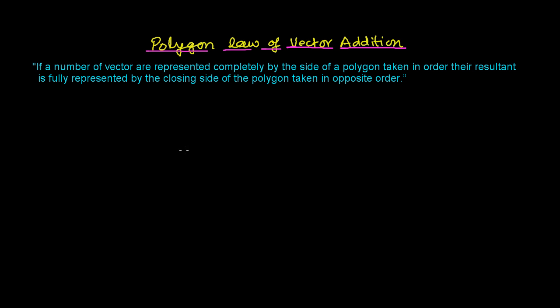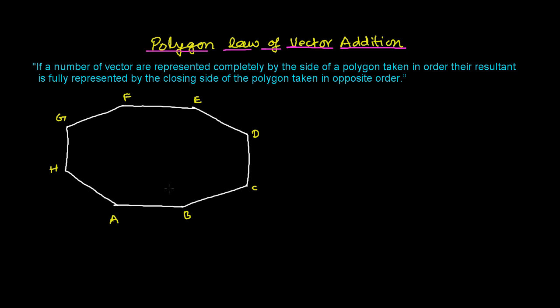So let's make a polygon. A polygon means any closed geometrical figure which has three or more than three sides — these are called polygons.